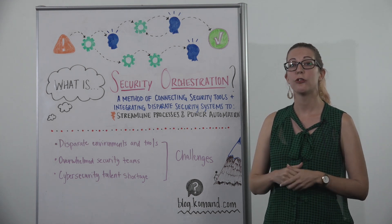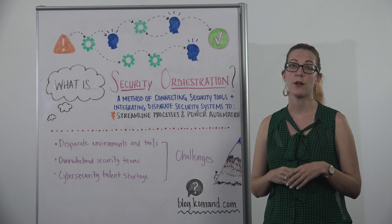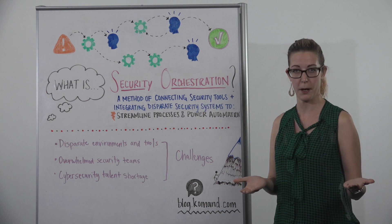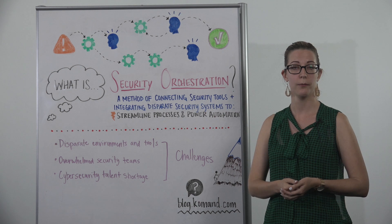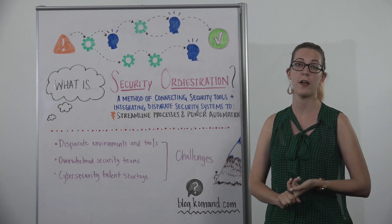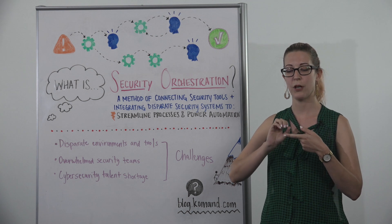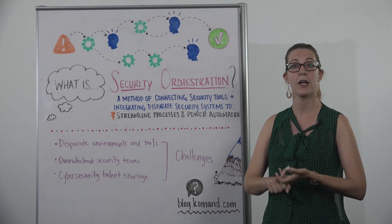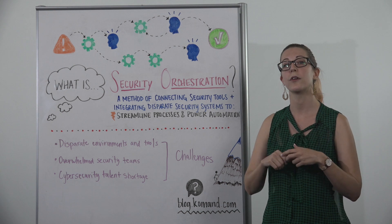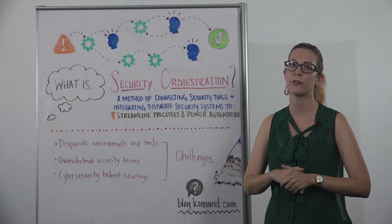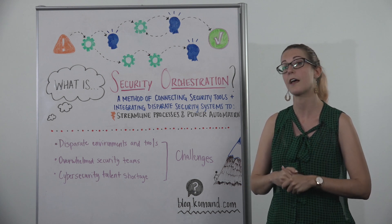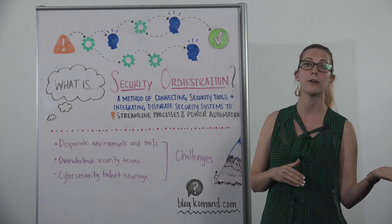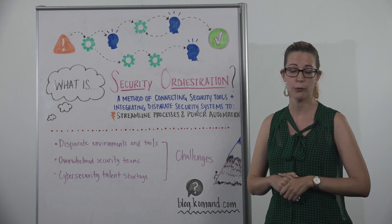The way security teams today usually handle phishing without orchestration or automation is: a member of the organization will forward an email to the security inbox, and the security team will triage out of that inbox — and all of this is done manually. Someone forwards an email, a security practitioner takes that email, grabs the attachments and detonates them in a sandbox, grabs all the URLs, links, and domains, and runs them through threat intel sources to see if there is malicious information. They do several of these steps across multiple tools to reach a confidence level to say yes, this is phishing, or no, it is not. This usually takes about 30 minutes per email to do manually.